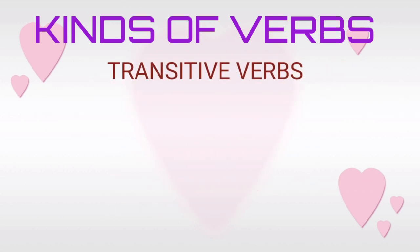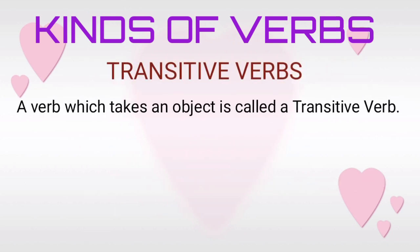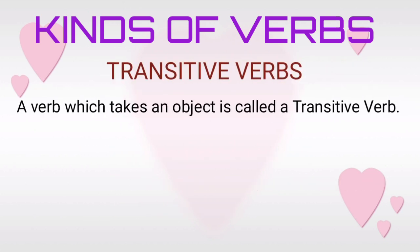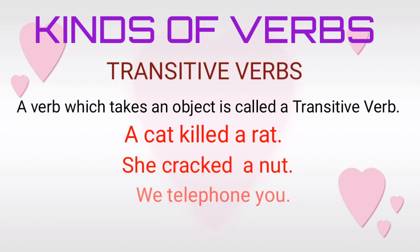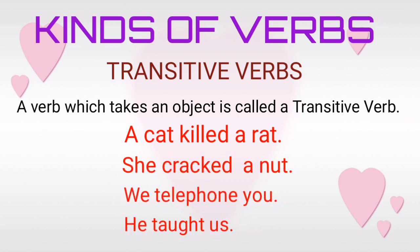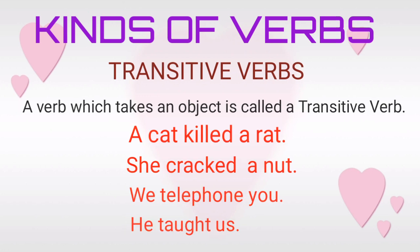Transitive verb: A verb which takes an object is called a transitive verb. Examples: A cat killed a rat. She cracked a nut. We telephoned you. He taught us. Remember, here an action passes over from the doer to an object.